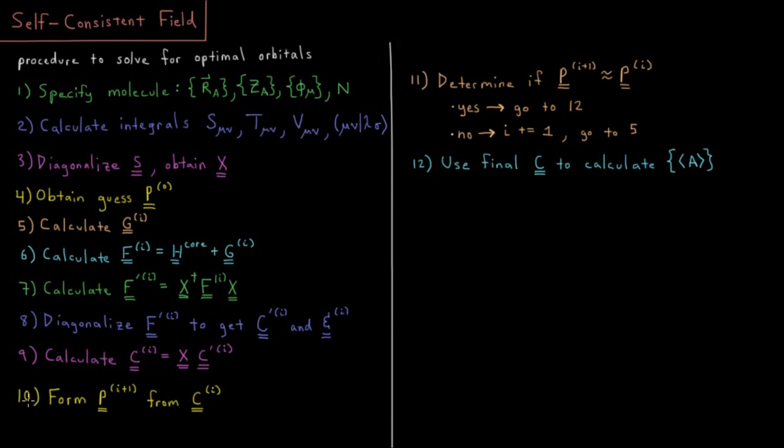Step 10 is we're going to form the density matrix of the next iteration. So in step four, we obtain the initial density matrix by some guess procedure. In step 10, we get it from the new set of coefficient matrices that we have, the new coefficient matrix. It gives us a new density matrix.